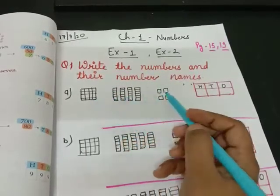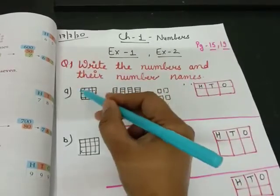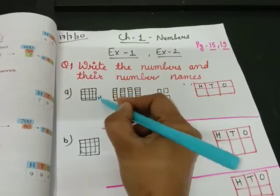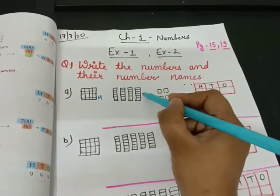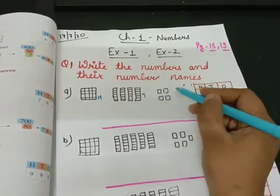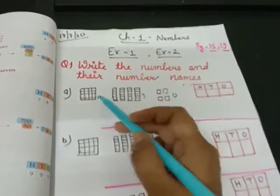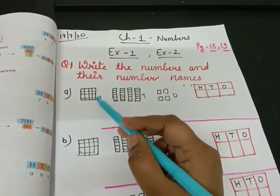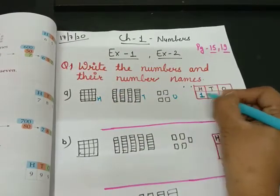There are three types of blocks. The big box denotes hundreds, the strip belongs to tens, and the small boxes belong to ones. So, how many hundreds are there? How many blocks are there? One. Write one.